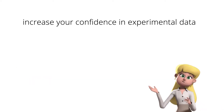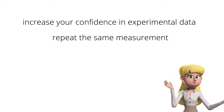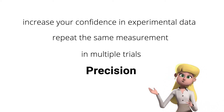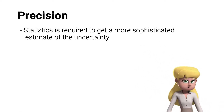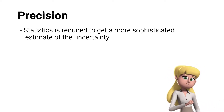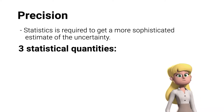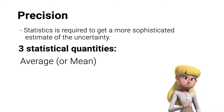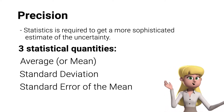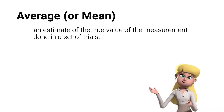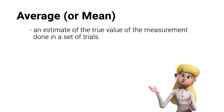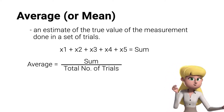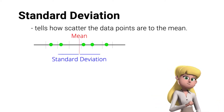Another way to increase your confidence in experimental data is to repeat the same measurement in multiple trials — this is where precision comes in. In precision, statistics is required to get a more sophisticated estimate of the uncertainty. When dealing with repeated measurements, there are three important statistical quantities to consider: the average or mean, the standard deviation, and the standard error of the mean. The average or mean is an estimate of the true value of the measurement done in a set of trials, obtained by adding all the data points and dividing by the number of trials. The standard deviation tells how scattered the data points are from the mean.